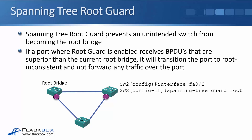Root Guard is configured at the interface level with the command 'spanning-tree guard root'. In the example on the slide, the root bridge is in the top left — the one we want to remain the root bridge. On the ports connecting to the lower switch, we configure 'spanning-tree guard root' so that if that switch starts sending out superior BPDUs, they will not be accepted and the connected port will be transitioned to root inconsistent, effectively shutting it down.